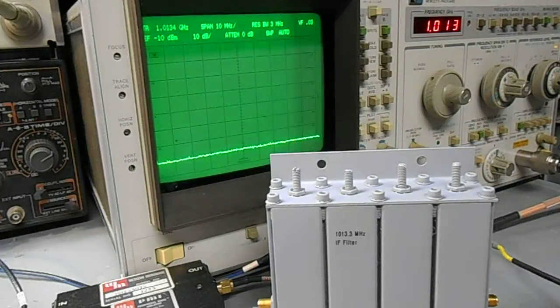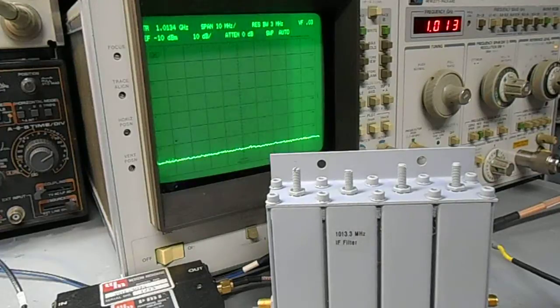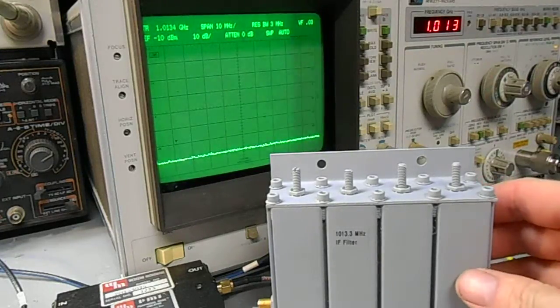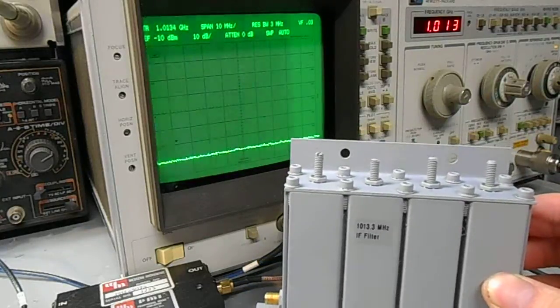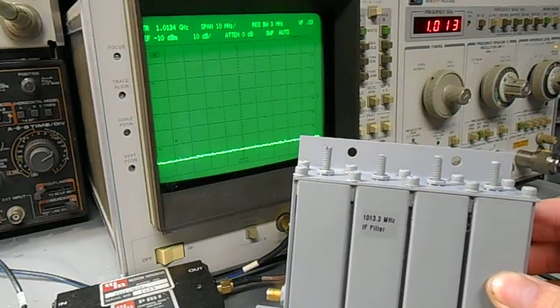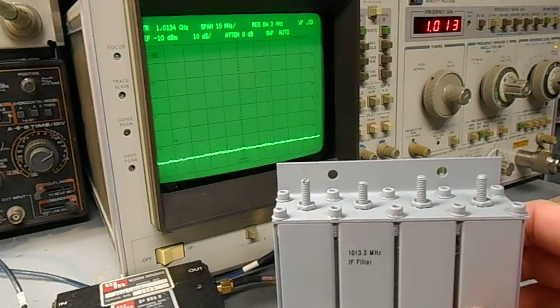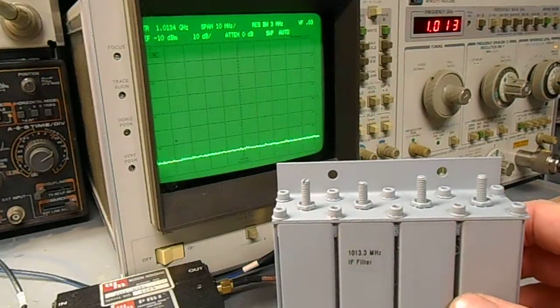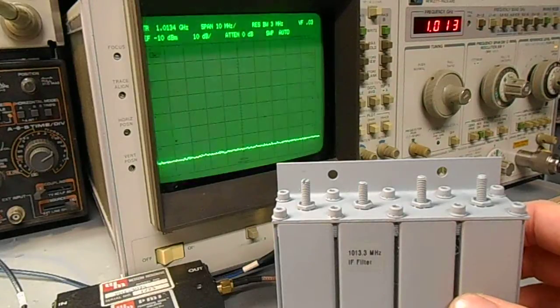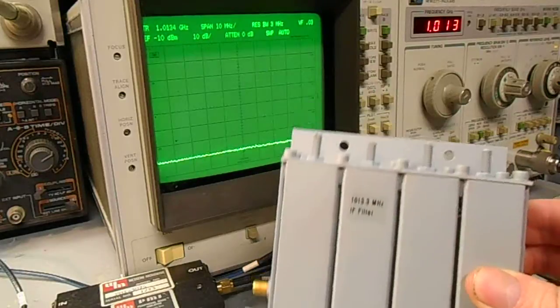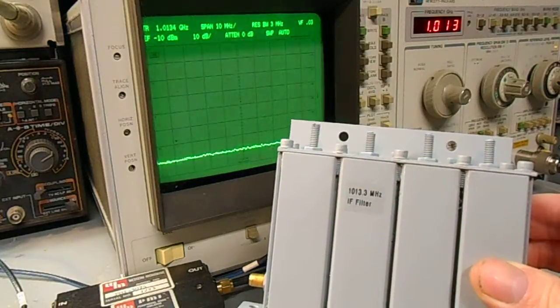Here's some notes on constructing the first IF cavity filter for the Scottie Spectrum Analyzer. This is a filter which passes the 1013.3 MHz first IF and attenuates the image frequency at 1034.7 MHz when using the 10.7 MHz IF. This is a very critical part of his Spectrum Analyzer design.